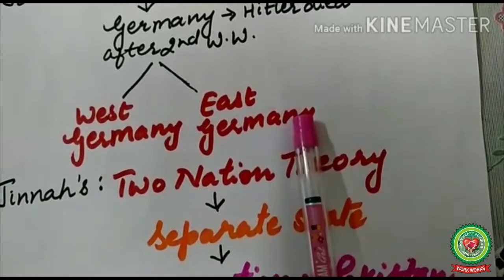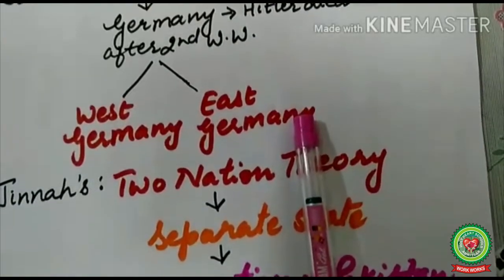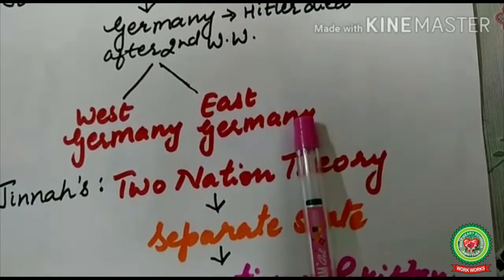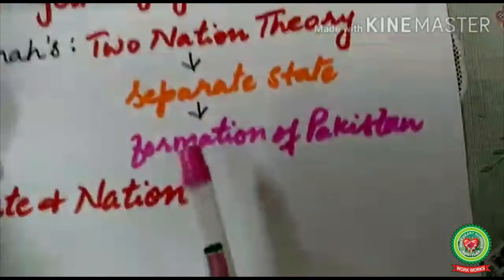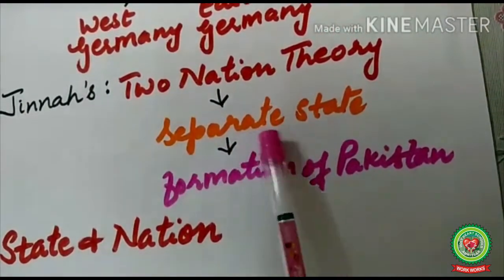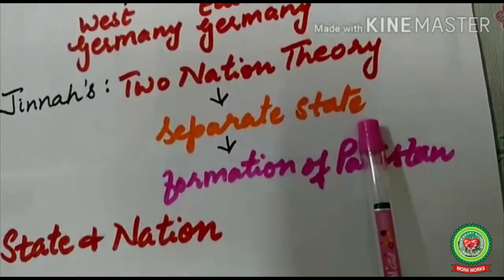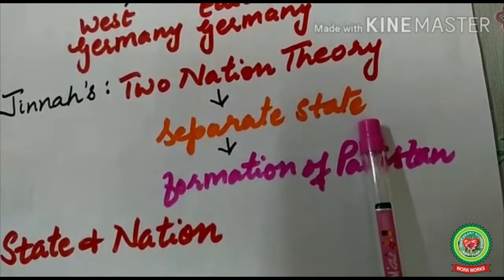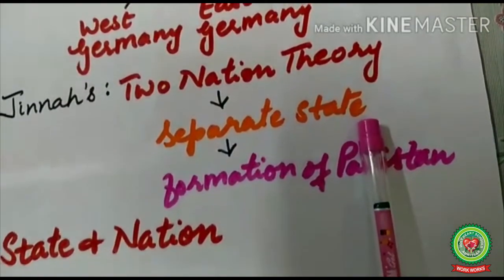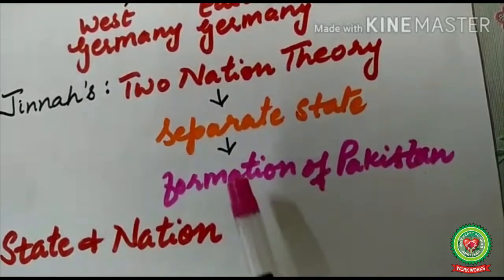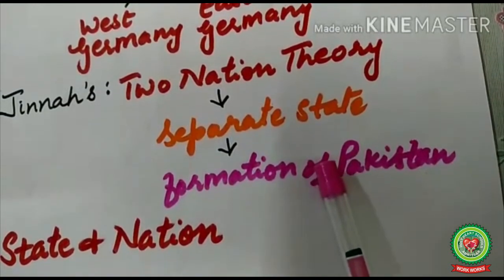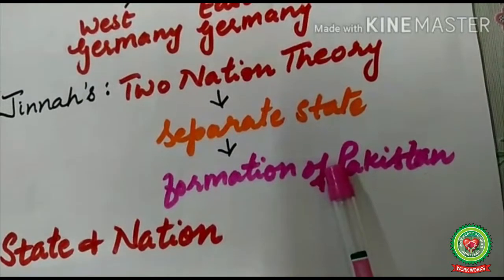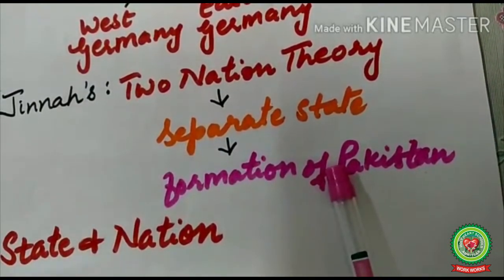A state can also be created on the basis of a nation. You may remember Jinnah's Two Nation Theory from Class 10. Jinnah argued there was nothing in common between Hindus and Muslims, and demanded a separate state. He said Muslims belong to a separate nation, and his demand for Pakistan was fulfilled. This makes it clear that a state can be created on the basis of a nation.